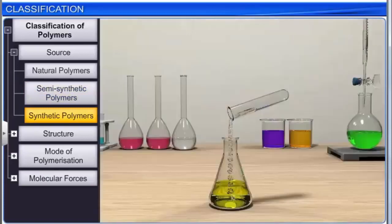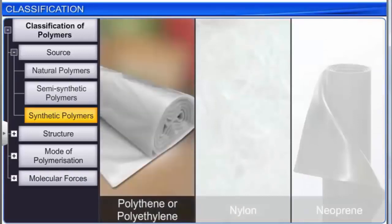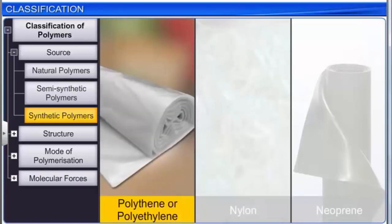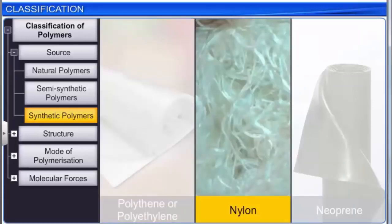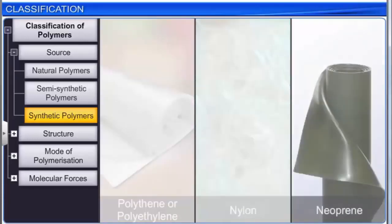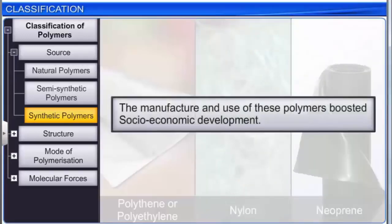Synthetic polymers are prepared in the laboratory. Examples include plastics such as polythene or polyethylene, fibers such as nylon, and synthetic rubbers such as neoprene. The manufacture and use of these polymers boosted socio-economic development.